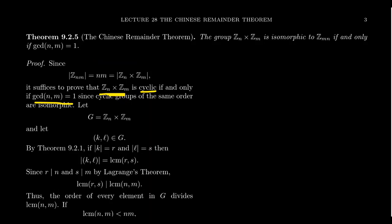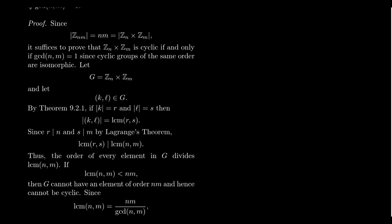Let's investigate why ZN × ZM is cyclic if and only if the GCD is 1. Let G be shorthand for ZN × ZM and take an arbitrary element (k, l) inside G. In the previous video we proved how to compute the order of an element in a direct product. Let R be the order of k and S be the order of l — then the order of the pair (k, l) is the least common multiple of R and S.